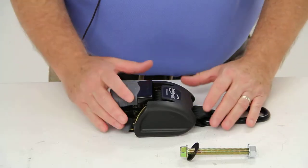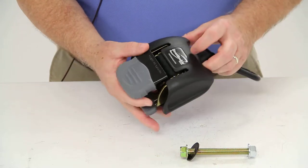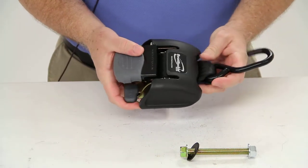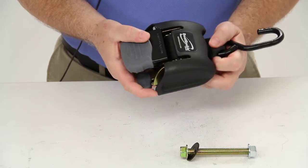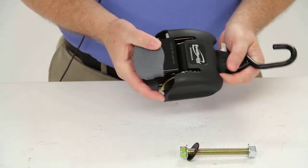Today we're going to review part number IMF14220. This is the Boat Buckle G2 Retractable Ratcheting Bow Tie-Down Strap. This tie-down strap will secure the bow of your boat to your trailer and it's quick and easy to use with the Boat Buckle Ratchet System.